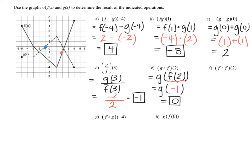Let's look at part f: f of f of two. Rewritten, that would be f of f of two. We start with f of two, the inner function. When x equals two on function f, the y value is negative one. That becomes the input, so we now find f of negative one. When x is negative one on function f, the y value is negative two. So the overall output here is negative two.